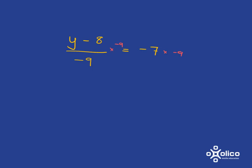So multiplying by negative 9 here will just leave us with y minus 8, and then negative 7 times negative 9, a negative times a negative is a positive, and 7 times 9 is 63.